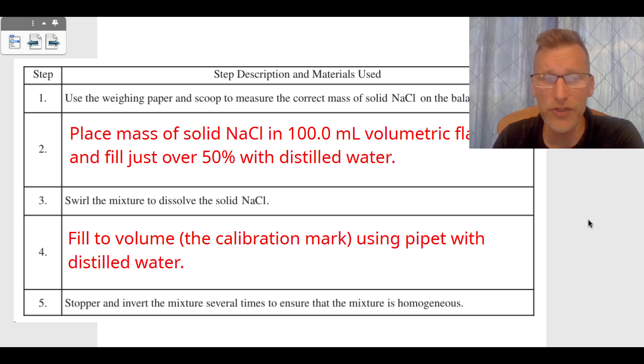Step three, we swirl it, we dissolve it. And then what are we going to do in step four? We have to fill it to the calibration mark. Fill to the volume using the pipette with the distilled water very carefully. And then we just invert it and make sure we mix it. So there's points two and three on this question number seven.